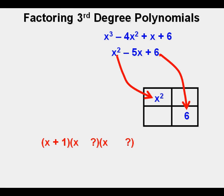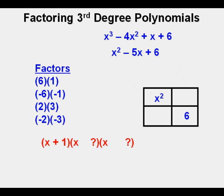To further factor our original third degree polynomial, we just have to factor x squared minus 5x plus 6 into two remaining binomials, if possible. For that we can use our box method and place x squared in the upper left corner and 6 in the lower right corner.